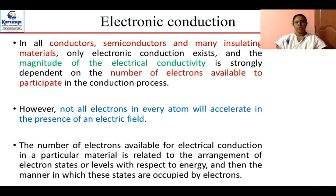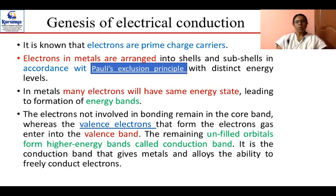Not all electrons in every atom get accelerated in the presence of an electric field. In an atom, there are electrons both at the core and valence electrons. The valence electrons play a huge role in electrical conduction — they are the prime charge carriers. Electrons in metals are arranged in shells and sub-shells according to Pauli's exclusion principle.